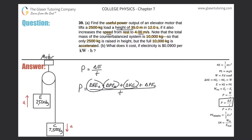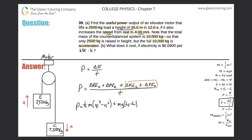Let's expand each of these terms. The change in kinetic energy can be rewritten as one-half M times (VF squared minus VI squared), and the change in potential energy as Mg(HF minus HI). That's for the elevator so far. Then we add one-half times the mass of the counterbalanced weight multiplied by its (final velocity squared minus initial velocity squared), plus its mass times G times (final height minus initial height). All of that is divided by time.